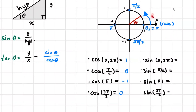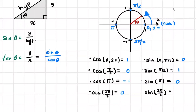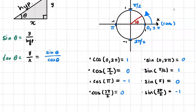So for sine of zero or two pi, our value is zero. When sine is at pi over two, the coordinates are zero comma one, so the value is one. Once we get to sine of pi, it's zero again. Then sine of three pi over two is negative one because it's at the bottom. We can find all the coordinate pairs as we move along the circle: one comma zero, zero comma one, negative one comma zero, zero comma negative one.